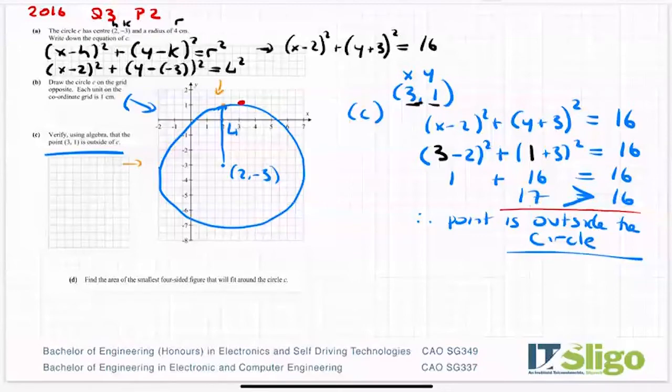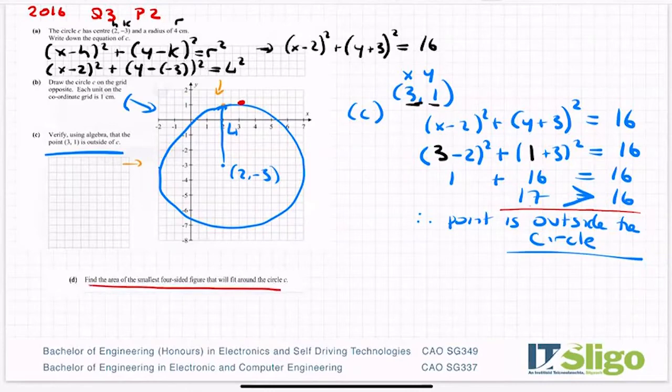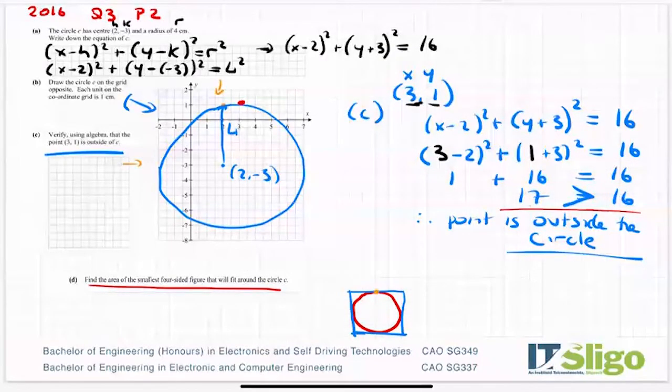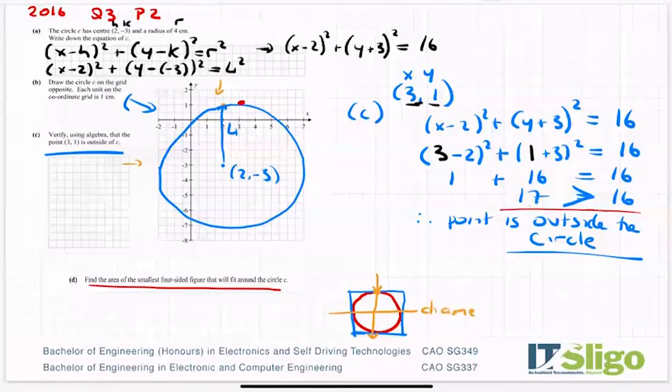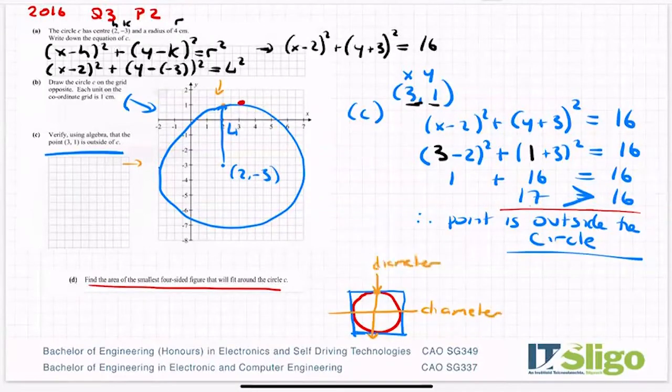Find the area of the smallest four-sided figure that will fit around this circle. So you have a circle and you want to put a square around it and it has to be the smallest square possible. Well, the smallest square is going to be from diameter to diameter. Can you see that? And of course, there's a diameter here as well. And then that's a diameter. And if that's the length of the side that runs through the center of the circle, well, then the square is also going to have sides that are the diameter.